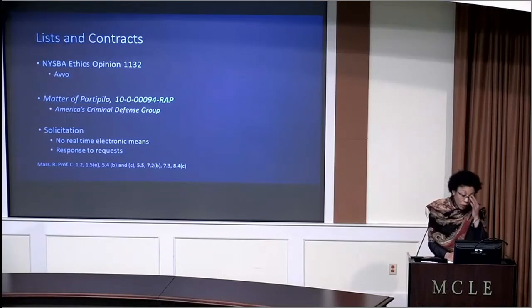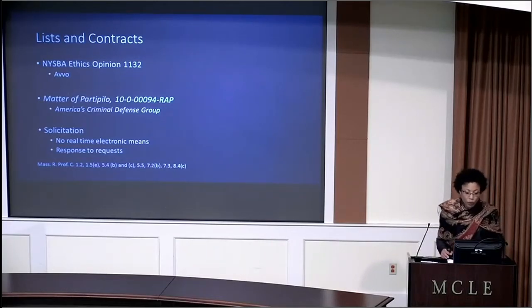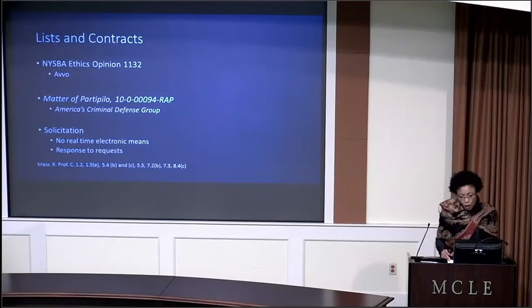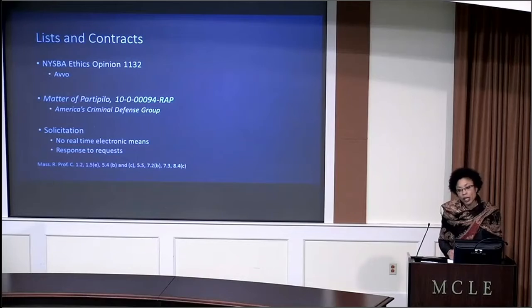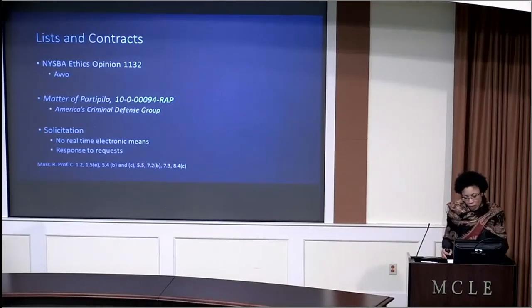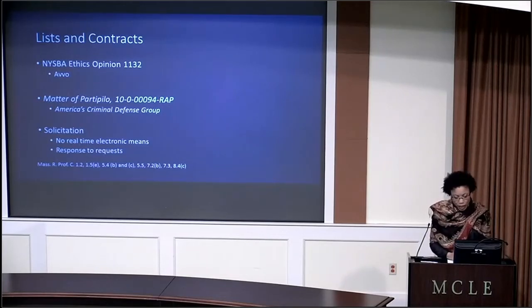I just want to pause here to say or note for your attention that Rule 7.3, which is the rule on solicitation, does prohibit real-time electronic means for contact except in limited instances, those being one in which the lawyer is familiar with the potential client because the lawyer has previously represented the client, where the lawyer has a familial relationship, a family relationship with the potential client. Also, where the lawyer is talking to another lawyer or otherwise talking to a potential commercial client. So those are excluded from the idea of making real-time electronic contact, but everything else is within the gambit that real-time electronic contact is not permitted.